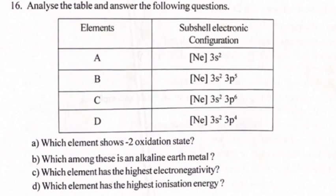16. Analyze the table and answer the following questions. Elements: Subshell Electronic Configuration. A: [Ne] 3s², B: [Ne] 3s² 3p⁵, C: [Ne] 3s² 3p⁶, D: [Ne] 3s² 3p⁴.